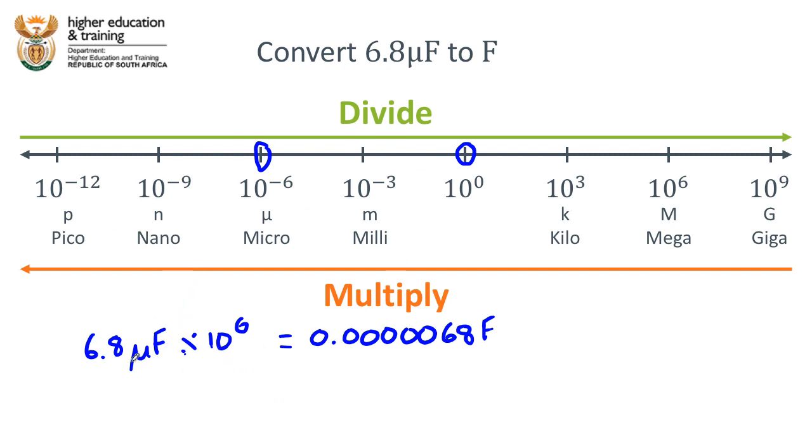Alright, so we would want to move the decimal point 6 units to the left in order to make this a smaller number. Well, where does it land us up?